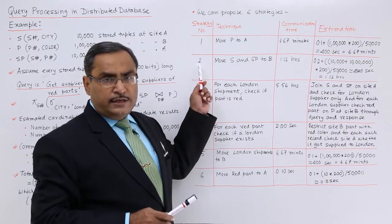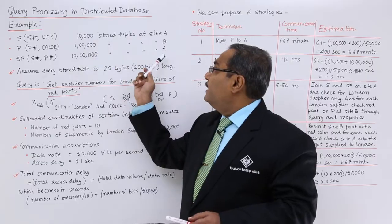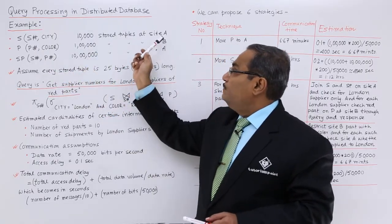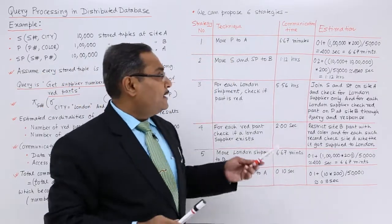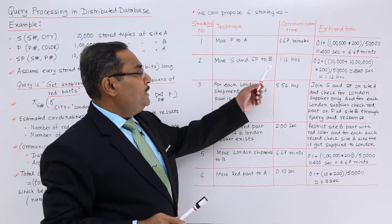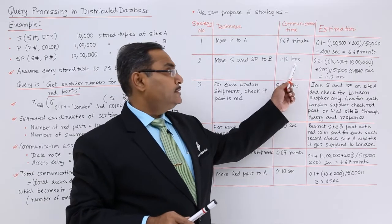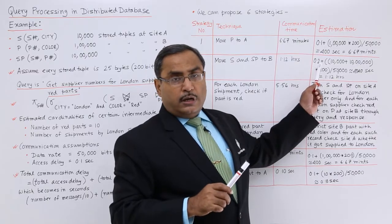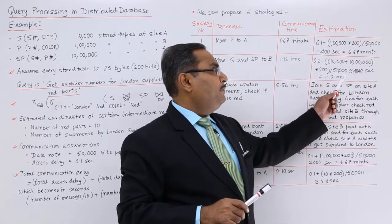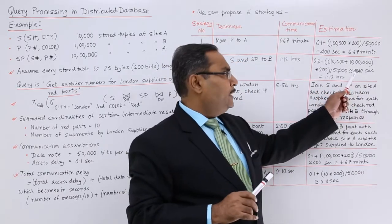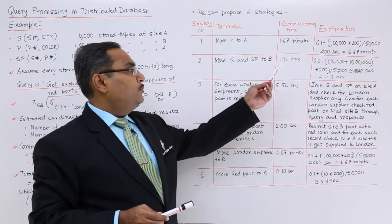Strategy 2: Move S and SP to site B. Instead of moving P to A, we move both S and SP to B. Since S has 10,000 tuples and SP has 10,00,000 tuples, the total data transferred is (10,000 + 10,00,000) × 200 / 50,000 ≈ 4,040 seconds ≈ 1.12 hours. The time unit is now in hours, not minutes.